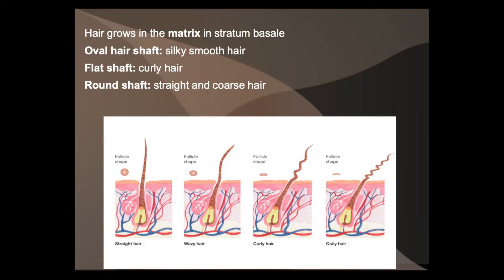Almost every gene in your body is a mixture of both parents, and hair follicle shape is influenced by multiple genes, not just one. Your hair color and texture can certainly change over time due to hormonal changes, environmental changes, or genes turning on and off. Women often experience changes in hair color and texture after pregnancy because hormones change the way genes are expressed, sometimes permanently.